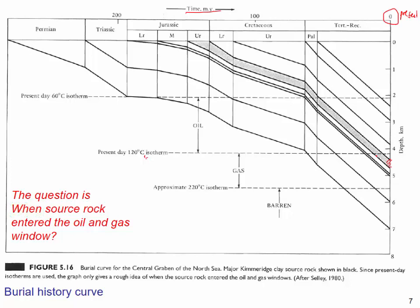So the question is: when did the source rock enter the oil window and the gas window? If we go back, this is a Jurassic formation. In Jurassic time, this formation was deposited and became deeper over time. There was much more organic activity then, so organic matter was preserved, making it the source rock found today. Geologists are also interested in whether it was oil-prone or gas-prone, or possibly both. This is called the burial history curve.